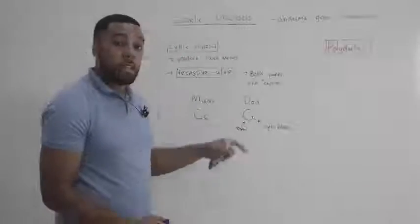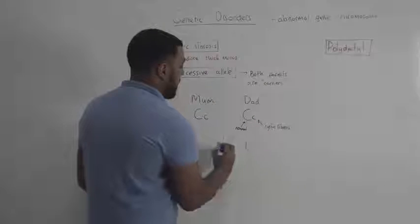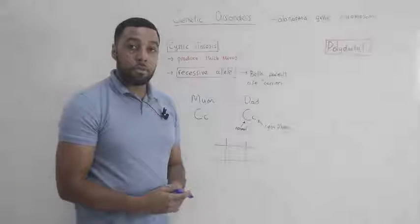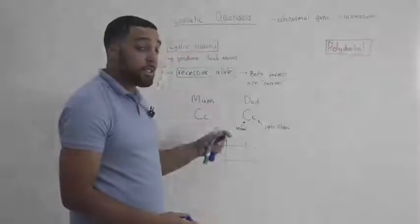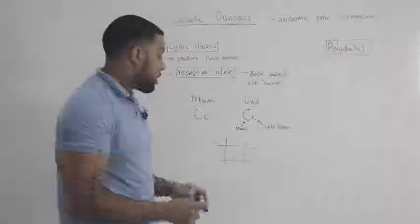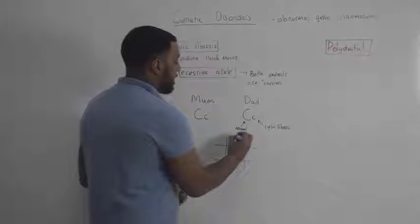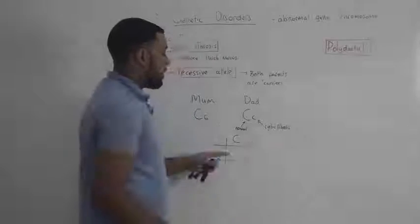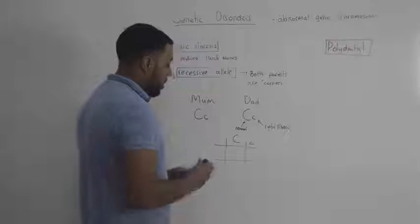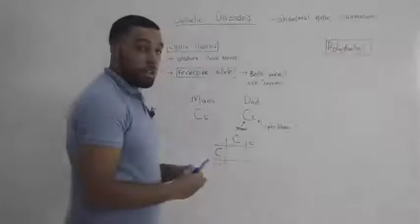But when this mom and dad reproduce, we can draw a genetic diagram to find out the probability of their children having cystic fibrosis. So I will put the dad's alleles at the top and I will put the mother's alleles at the side.